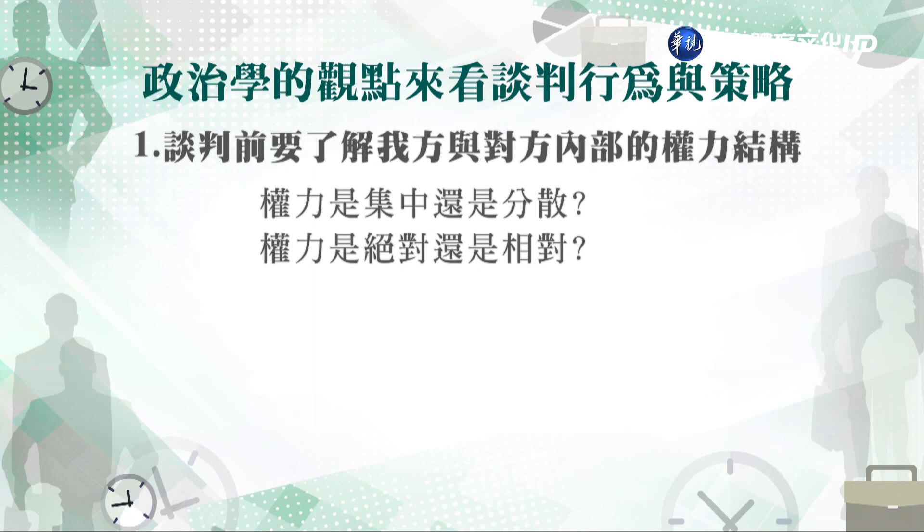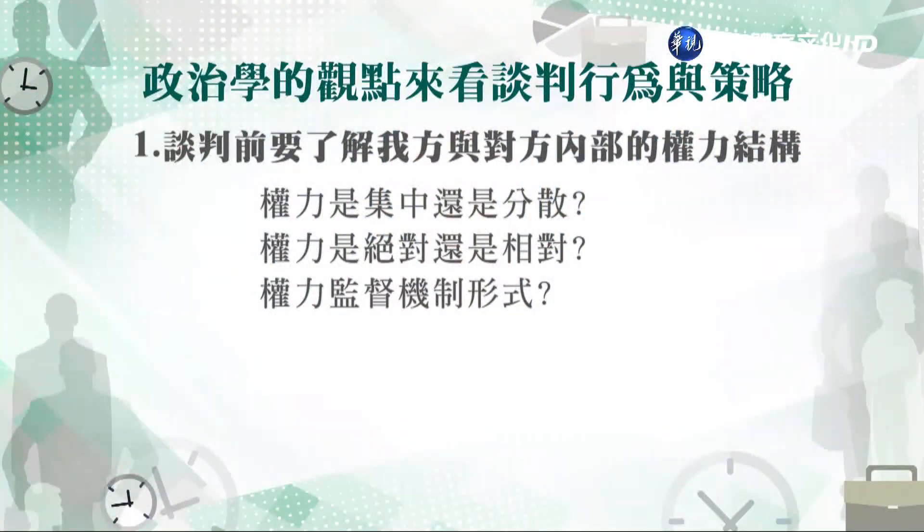現在不一定是key man，因為可能是woman，也可能是男性，所以我們要知道對方的key person是誰。再來，權力是絕對的還是相對的？對方是由一個人掌握所有的權力，還是有主要的權力擁有者而其他人影響這個主要決策者？還有他的權力監督機制的形式是什麼，從權力分配與分散的角度來切入整個談判策略。